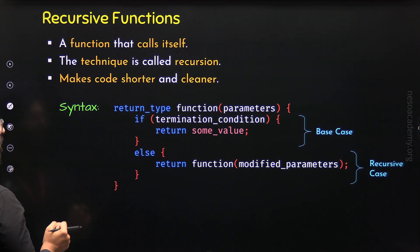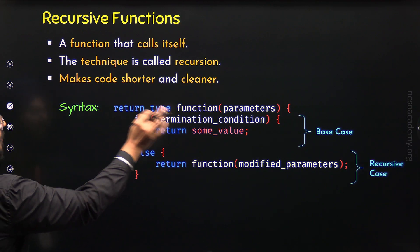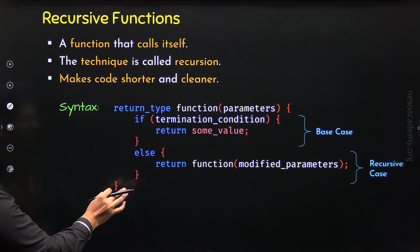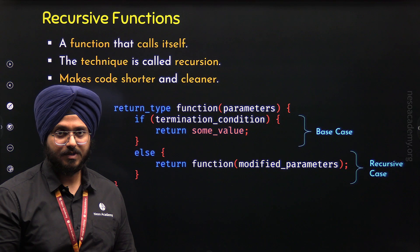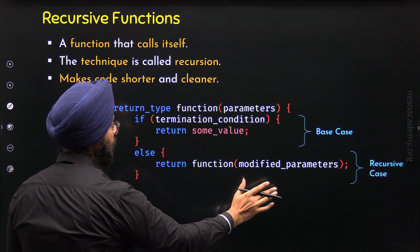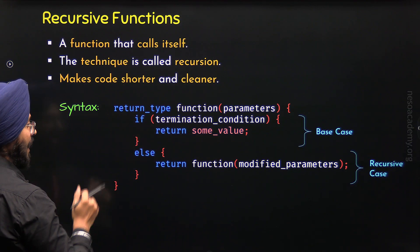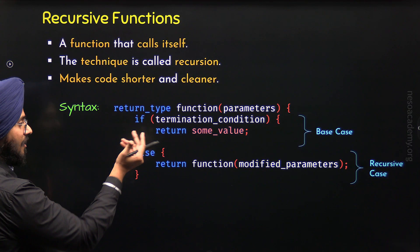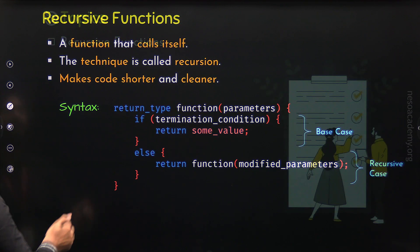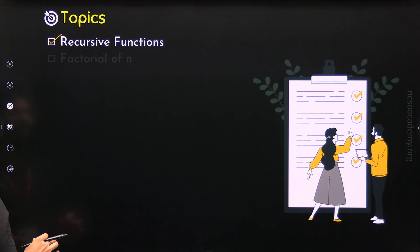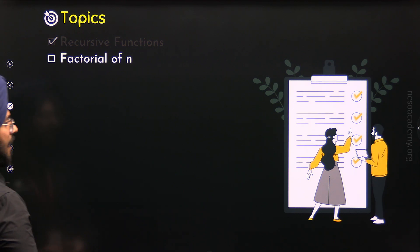Any recursive function is formed from a base case and a recursive case. The base case is needed to terminate the recursive function, and the recursive case is needed to solve the problem recursively. We solve the big problem through smaller versions of it until we reach the base case, after which values are returned until we reach the final output. Now let's move to the second topic: factorial of N.